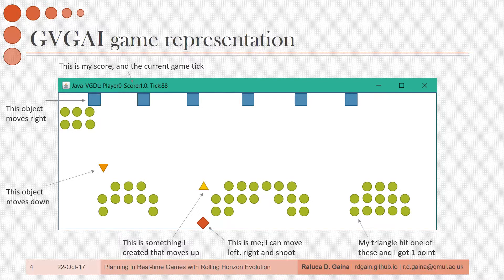And I also get one point. I know that the green circles don't move, that there are objects moving straight down, and some that move to the right and keep spawning in the top left corner. I know my current score is 1, and that I have been playing the game for 88 ticks. Essentially, I don't know that I am playing Space Invaders. I have to figure out that by creating triangles that move up, which then collide with the objects at the top of the screen — shooting them in human terms — I can get rid of all those objects and win the game.